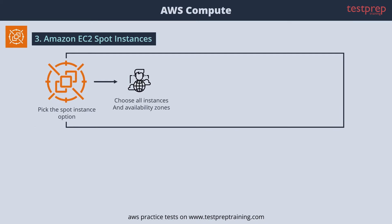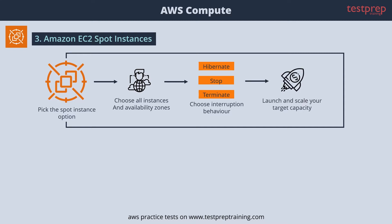High performance computing (HPC) and other test and development workloads also benefit from spot instances. For using spot instances, you choose all instances and availability zones that work for your workloads, then choose your interruption behavior, and then launch and scale your target capacity.